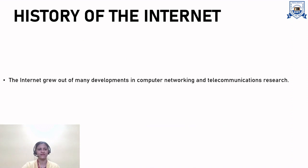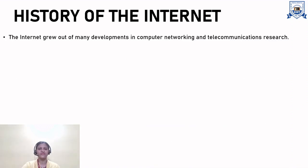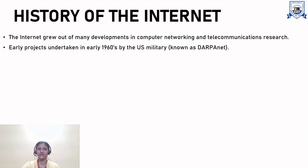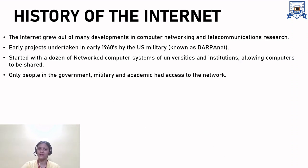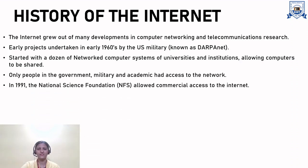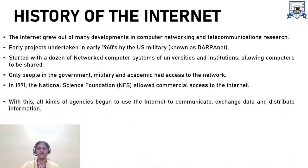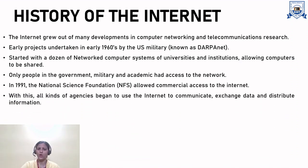The history of Internet. The Internet grew out of many developments in computer networking and communication research. Early projects undertaken in the early 1960s by the US military, known as DARPA-NET, started with a dozen networked computer systems of universities and institutions, allowing computers to be shared. Only people in the government, military, and academia had access to the network. In 1991, the National Science Foundation allowed commercial access to the network, and all kinds of agencies began to use the Internet to communicate, exchange data, and distribute information.